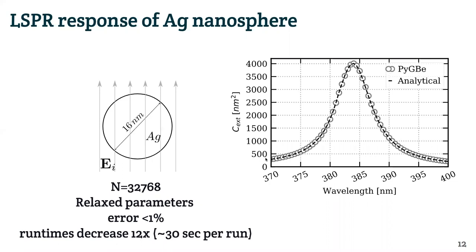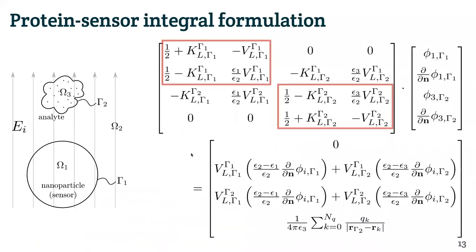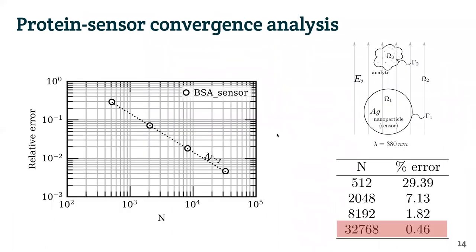We wanted to study not only the nanoplasmonics of an isolated nanoparticle, but how the response of the extinction cross-section changed when we added a protein in the vicinity. Once we introduce another particle in the vicinity, the equations get much messier, but we could still see this two-by-two block pattern, and the outer interactions between the particles. We wanted to see if we could obtain a shift on the extinction cross-section once we placed a protein in the vicinity, so again we performed a convergence analysis for a setup that is a protein and a sensor.